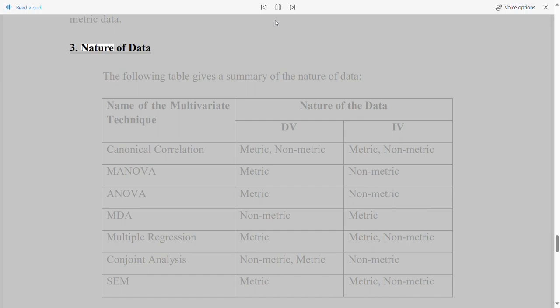3. Nature of data. The following table gives a summary of the nature of data. Name of the multivariate technique, nature of the data: BV4 - Canonical correlation: metric, non-metric, metric, non-metric. MANOVA: metric, non-metric. ANOVA: metric, non-metric. MDA: non-metric, metric. Multiple regression: metric, metric, non-metric. Conjoint analysis: non-metric, metric, non-metric. SEM: metric, metric, non-metric.